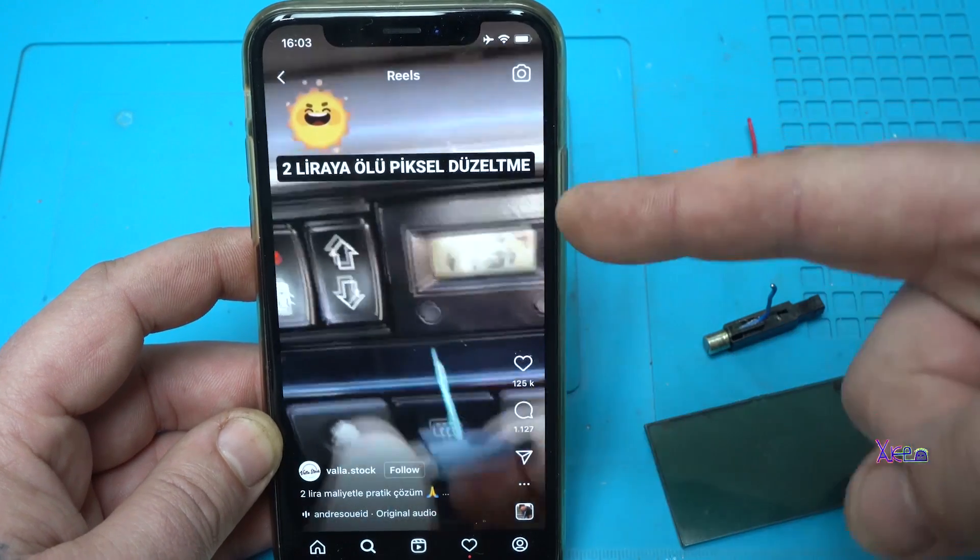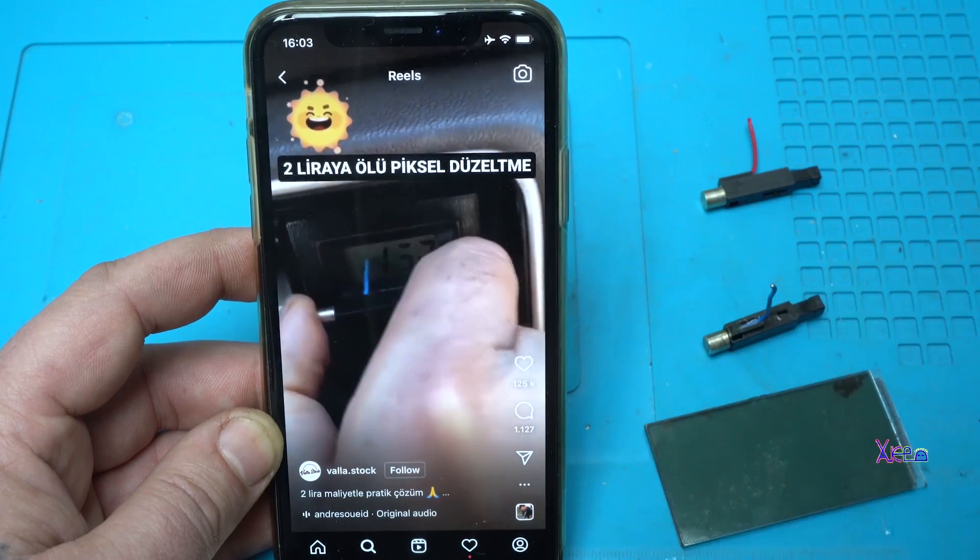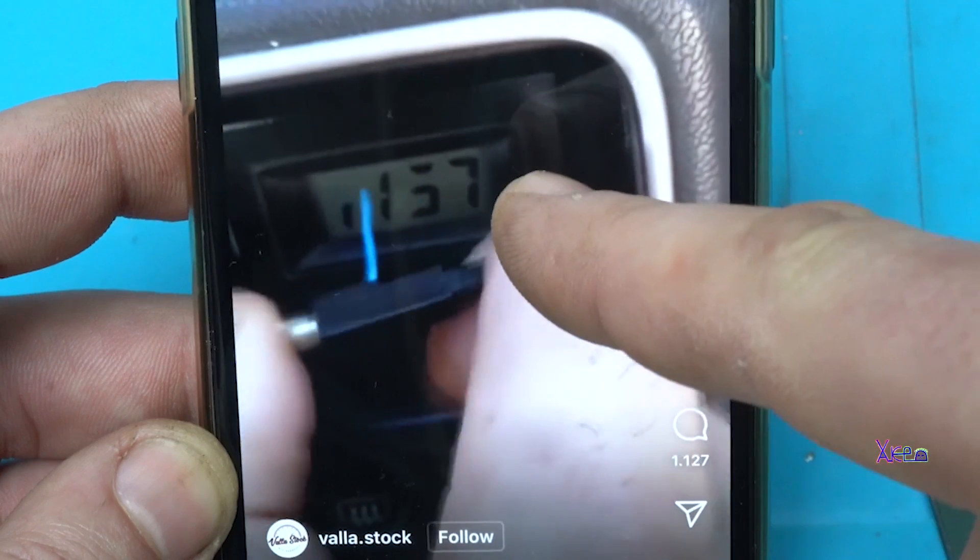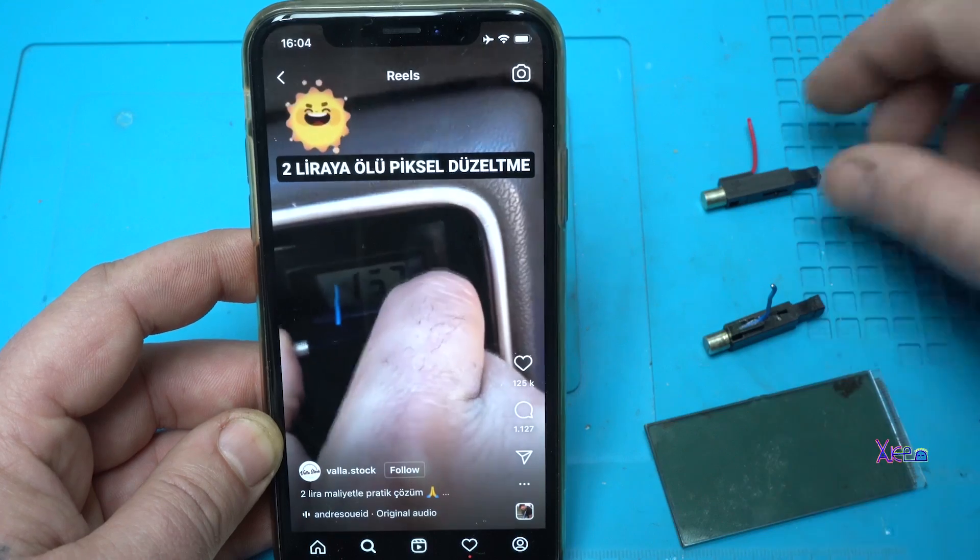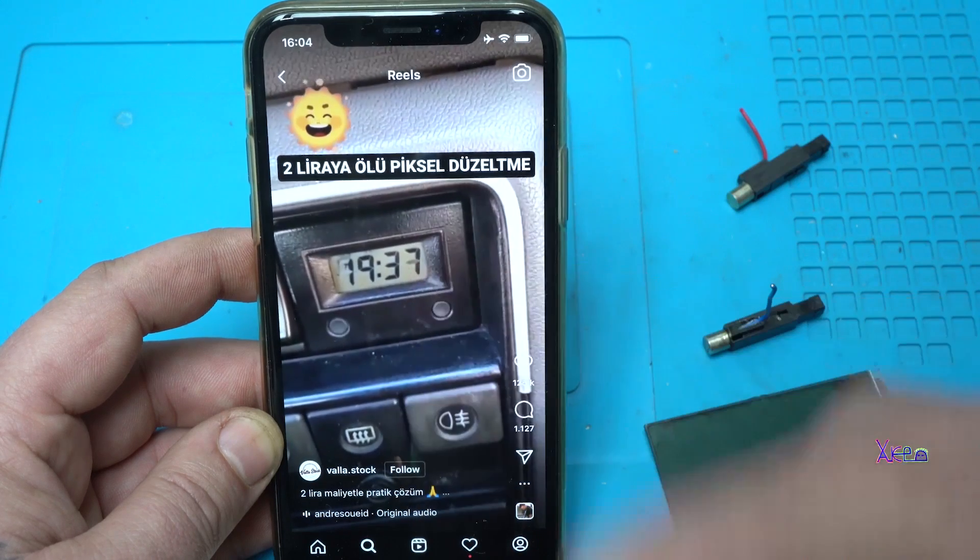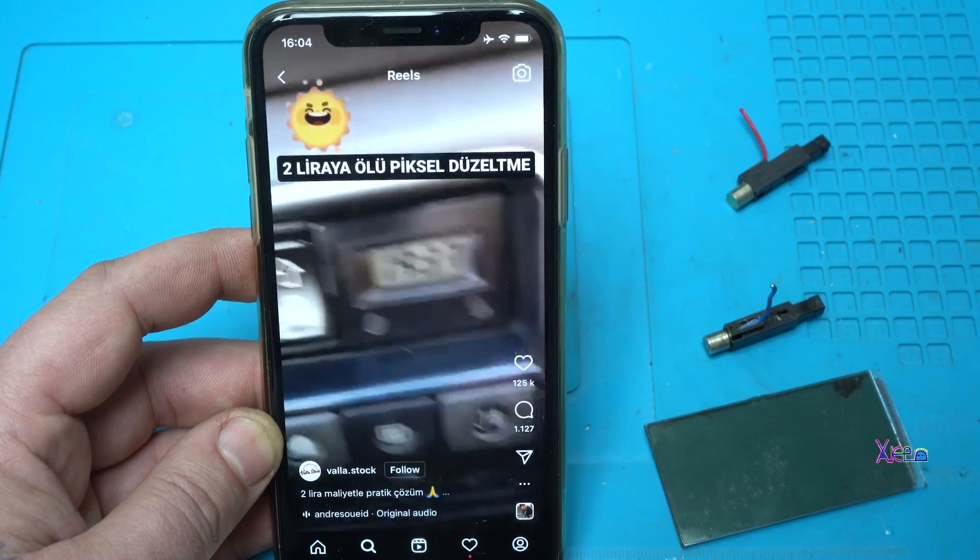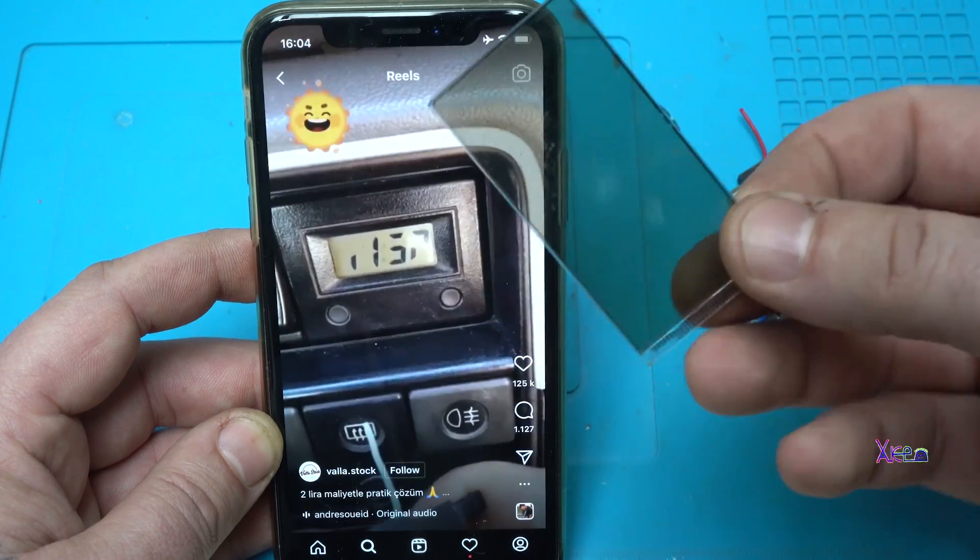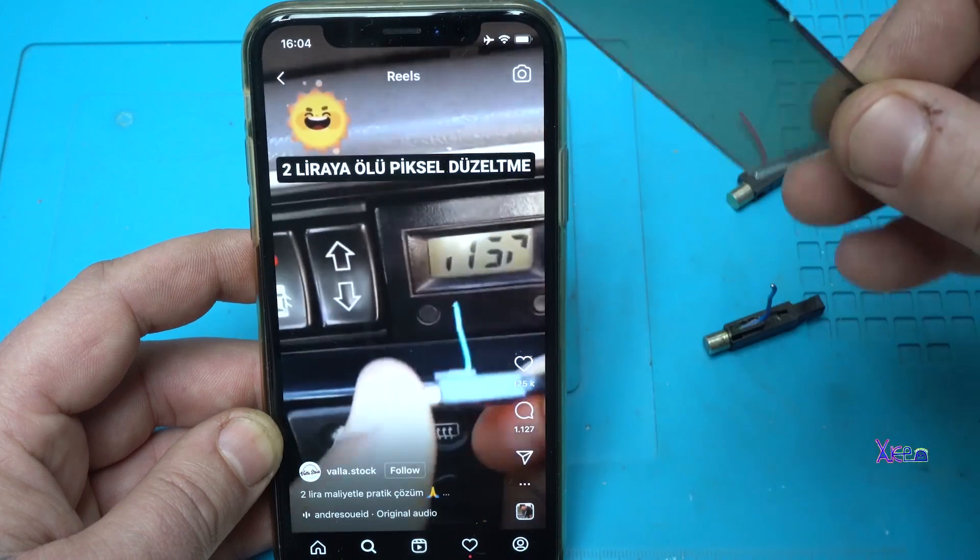Okay on Instagram I found this trick and this guy fixed the ghost numbers on the LCD screen on the clock with this piezo electric igniter and look it's fixed. So I'm gonna use to show you on this LCD screen how it works.